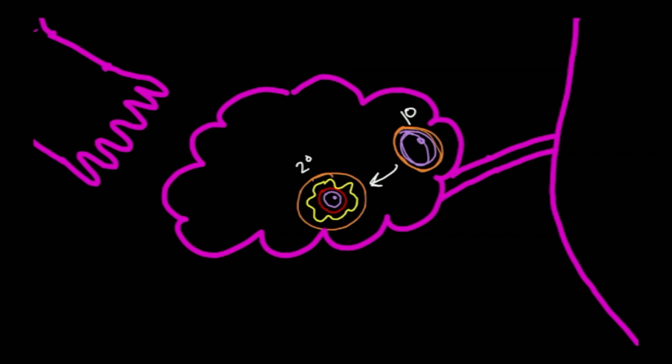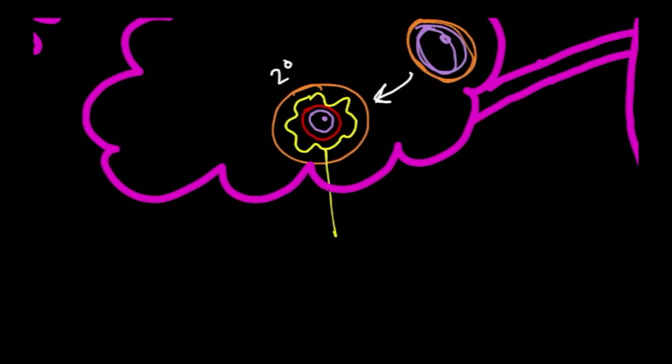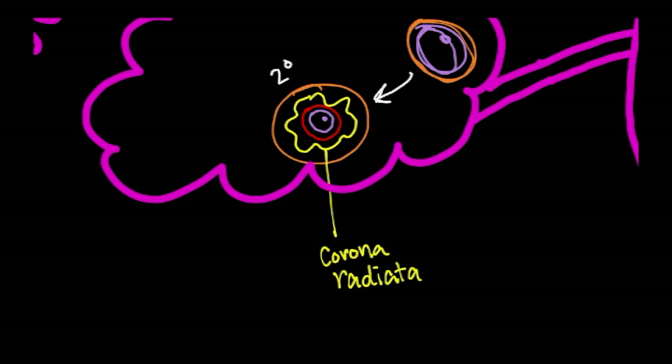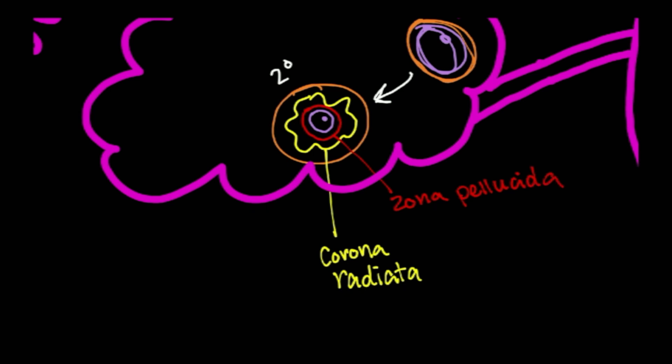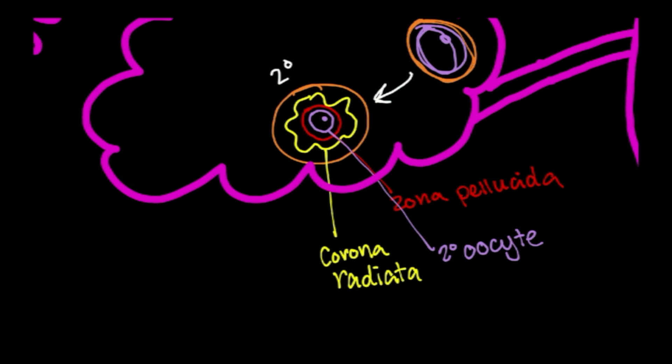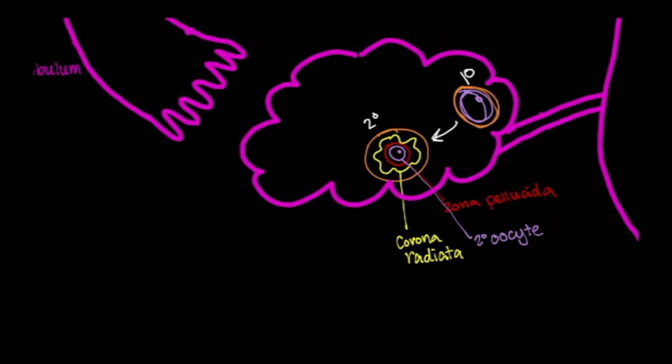And what that mature follicle looks like, I will label that here. In yellow is what's called the corona radiata. In red is the zona pellucida. And then in purple is the actual oocyte. The function of the corona radiata and the zona pellucida is to protect and nourish the oocyte, and it also serves a function in assisting in fertilization, which we will go into more detail a little bit later. So we've got our mature follicle. It is ready to ovulate the egg.